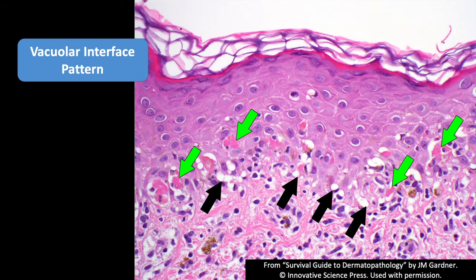This is a really important part of the talk: the vacuolar and lichenoid types of interface dermatitis. Recognizing interface dermatitis is a crucial skill in dermatopathology, and it's not that hard to do. We call it interface dermatitis because at the interface of the epidermis and dermis is where the inflammatory damage is happening. Lymphocytes come up and attack the basal keratinocytes.